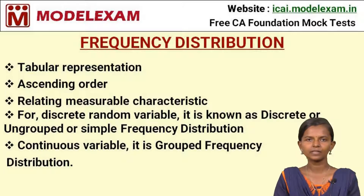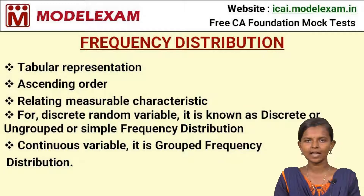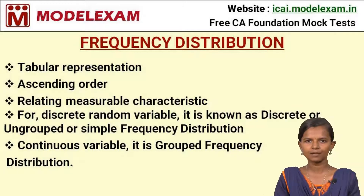There are two types of variables: discrete random variable and continuous variable. If the frequency distribution is done for a discrete random variable, we call that a discrete, ungrouped, or simple frequency distribution. If it is done for a continuous variable, we call it a grouped frequency distribution.